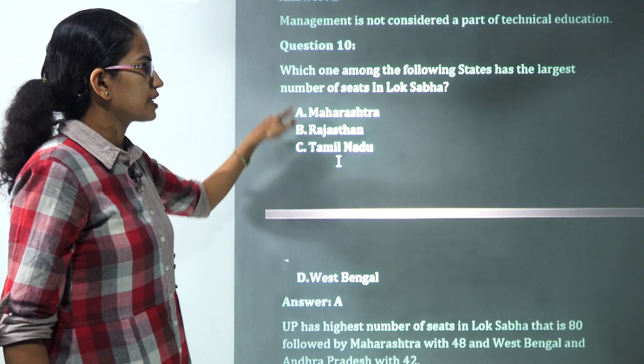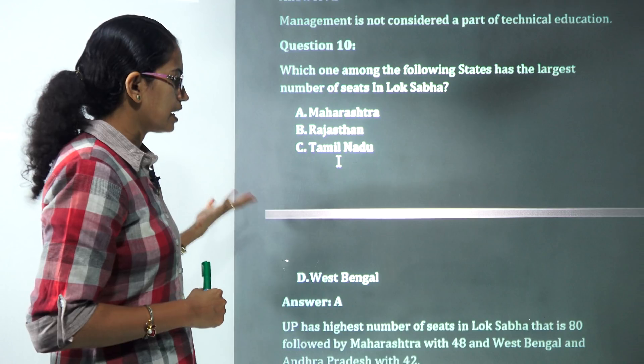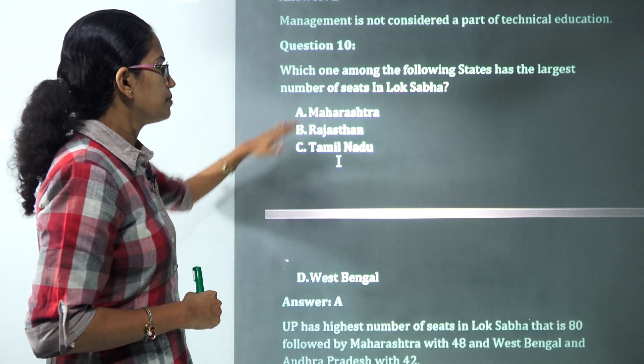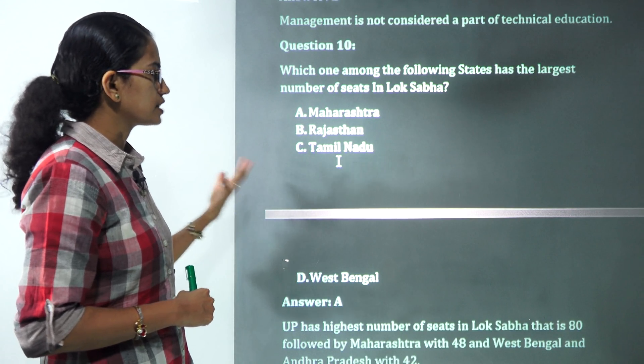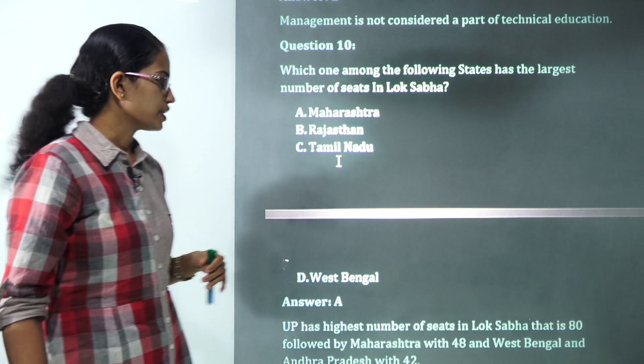Among the given state which has the largest number of seats in Lok Sabha, Uttar Pradesh has technically the largest number of seats that's around 80. But since Uttar Pradesh is not in the choice, the next is Maharashtra led by West Bengal and Andhra Pradesh. So Maharashtra would be the correct choice here.